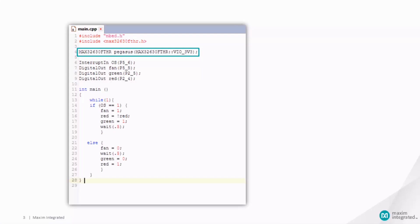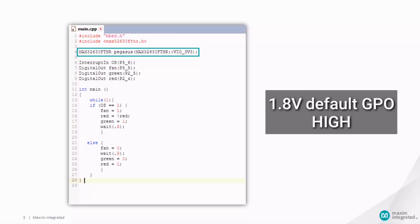It is important to note that the default output voltage for a GPO on the Feather board is 1.8V. We need to add MAX32630 Feather library files along with this line of code which activates the LDO and enables 3.3 volts to the GPO.